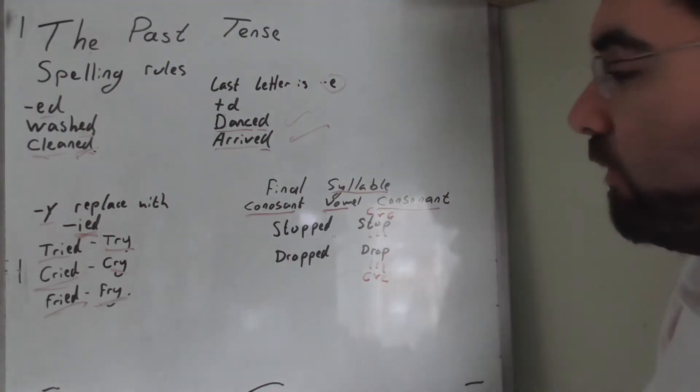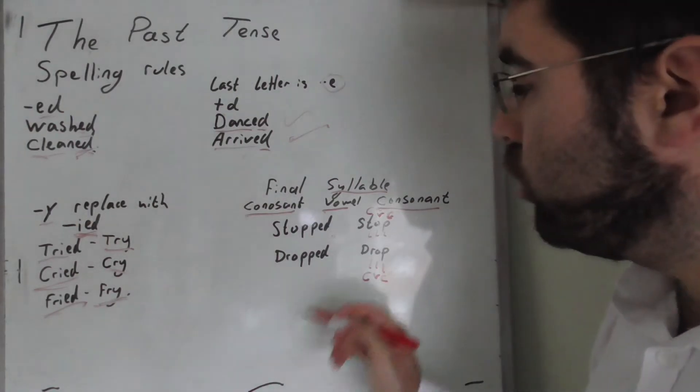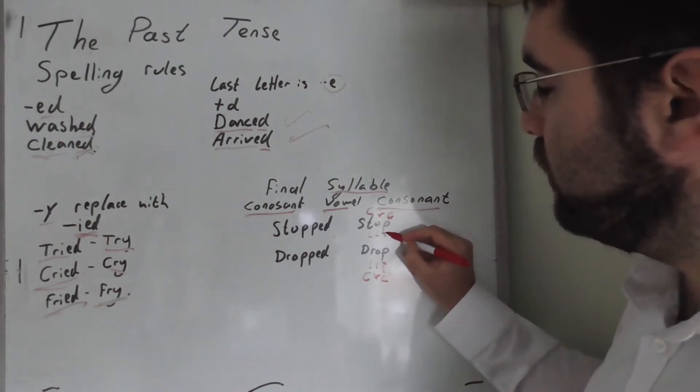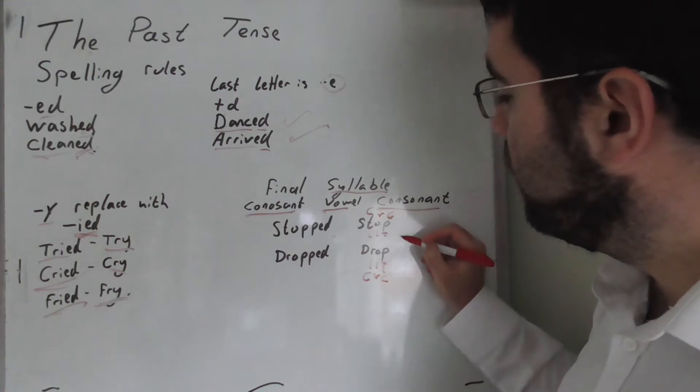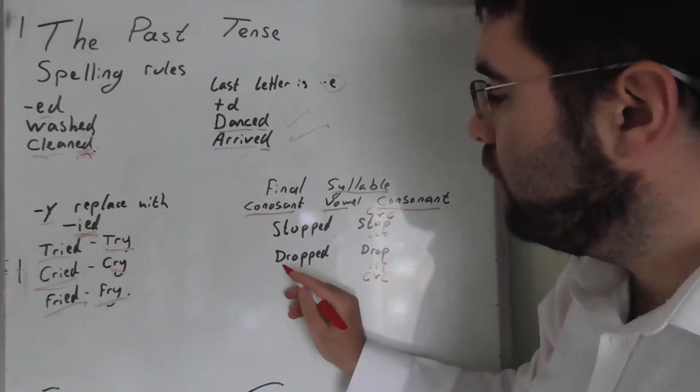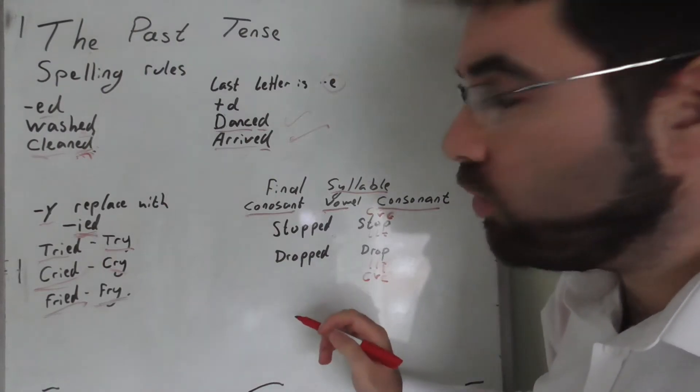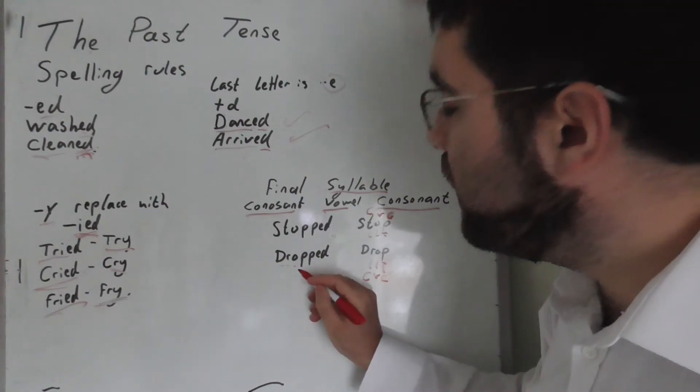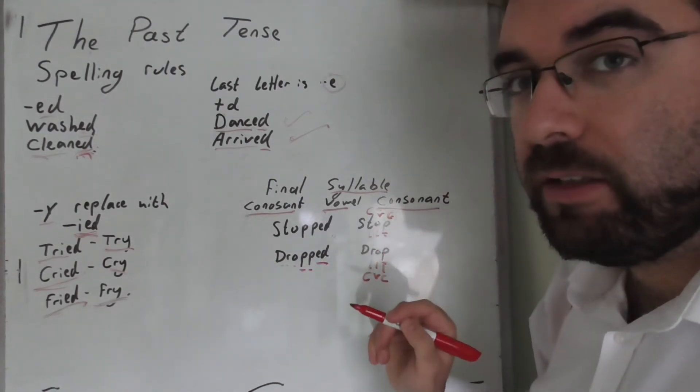What we do is double the last consonant, which is P, and then add E-D. Drop turns into dropped: D-R-O-P-P-E-D.